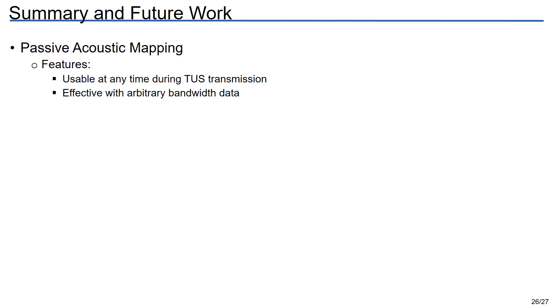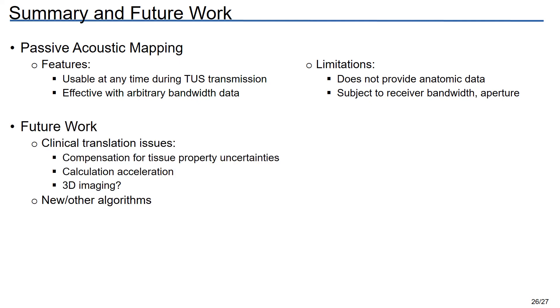Okay to summarize, passive acoustic mapping can be used at any time during a therapeutic ultrasound transmission allowing us to localize and quantify different types of cavitation activity that may be useful for a particular therapeutic application. We can do this with arbitrary bandwidth data. This method is subject to the limitation that there is no anatomic referencing built in so it does need to be paired with something else like B-mode or CT and the results are subject to receiver bandwidth and aperture. Going forward there's still plenty of work to do including trying to work out 3D imaging using a 2D handheld array and there's certainly plenty of more work that can be done in terms of beamforming algorithms. This is a quite live and ripe research area and there's a lot of good work going on right now that you'll be hearing about I'm sure very soon. In the meantime there's quite a bit more to uncover so by all means keep digging.